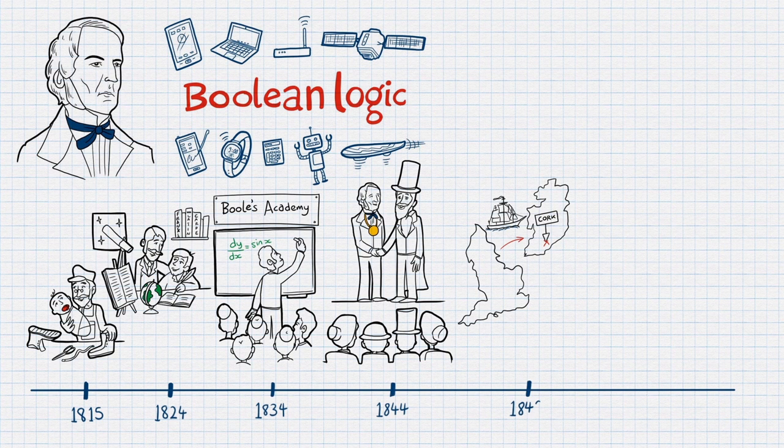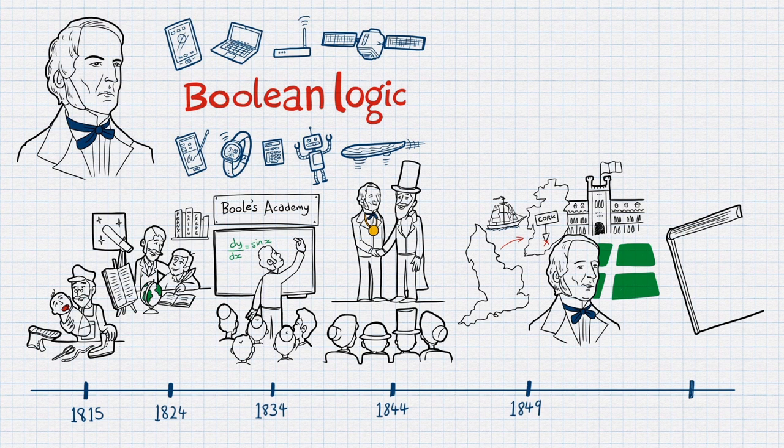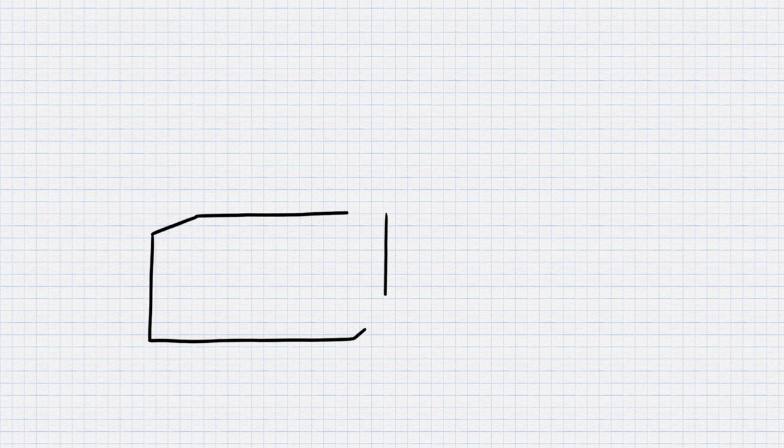In 1849, he was invited to University College Cork, Ireland, to be the first professor of mathematics. In 1854, he wrote The Laws of Thought, which described his theories of logic and algebra.